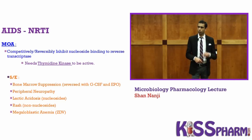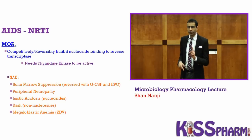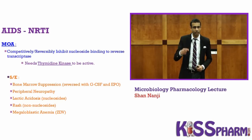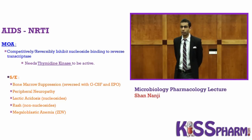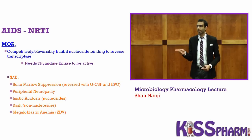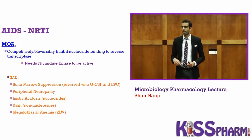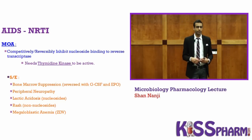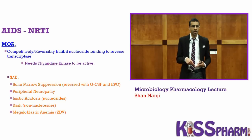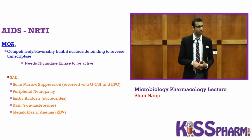All NRTIs need to be activated by thymidine kinase. Side effects include bone marrow suppression — which can be reversed with G-CSF and EPO — as well as peripheral neuropathy, lactic acidosis, and megaloblastic anemia.